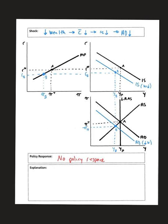So what happens if there's no policy response at all? Well, that means that we are going to have what we call the self-correcting mechanism going on. At point B, we have a negative output gap. You see that right here. Our current level of output is less than potential GDP. This is a negative output gap.